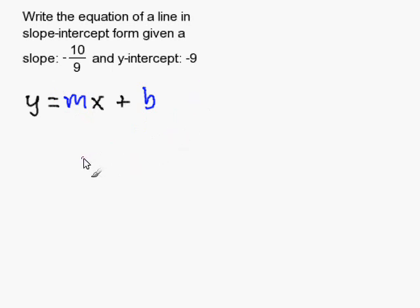So now all you have to do is substitute in for your m and substitute in for your b. So I am going to replace m with negative 10 over 9. x remains the same. And negative 9 is the same thing as minus 9.